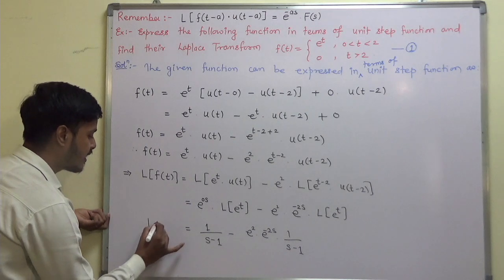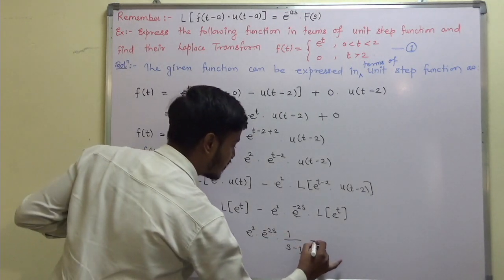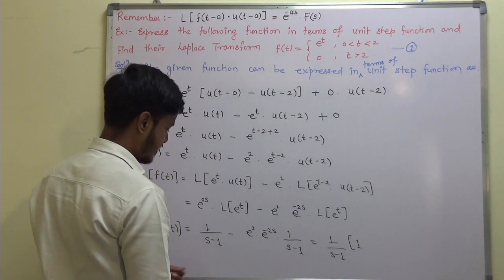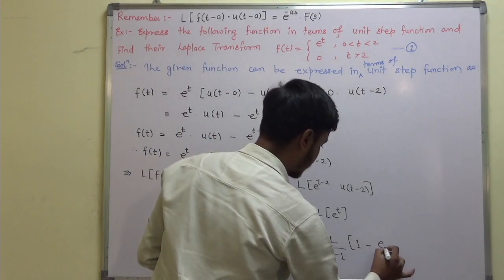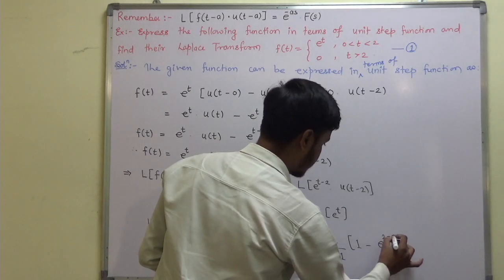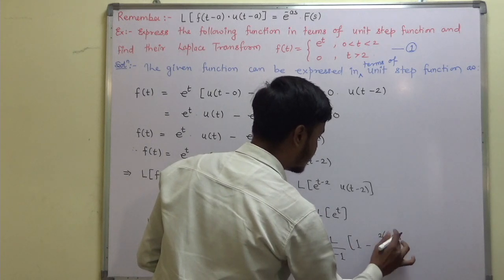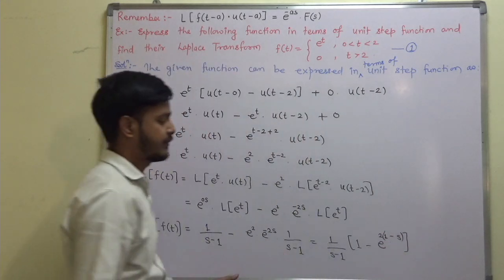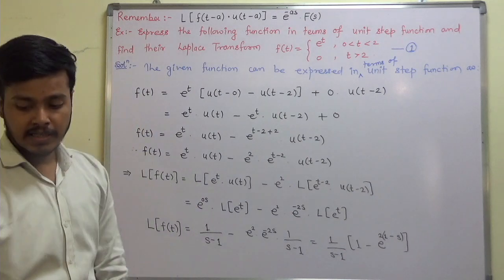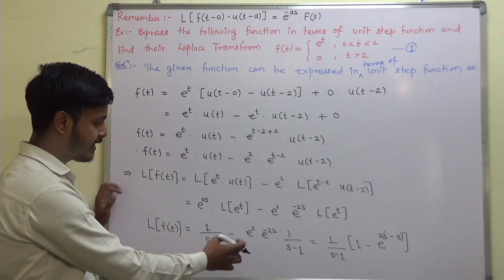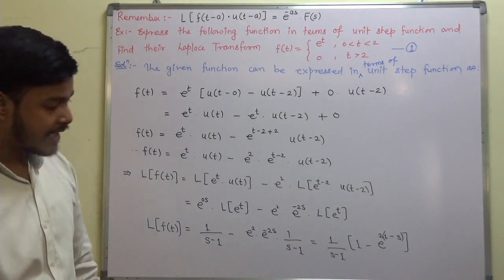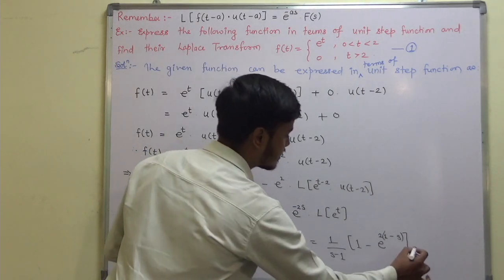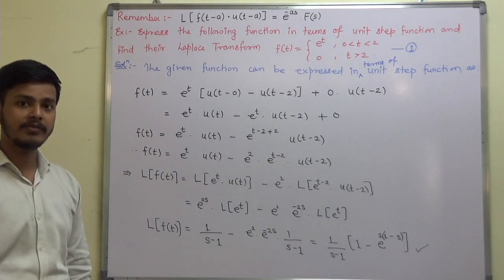So the final answer: L{f(t)} = 1/(s-1) · [1 minus e^(2-2s)]. You can factor out 2 to write it as 1/(s-1) · [1 minus e^(2(1-s))]. This is the final answer to this problem — very easy, very simple.